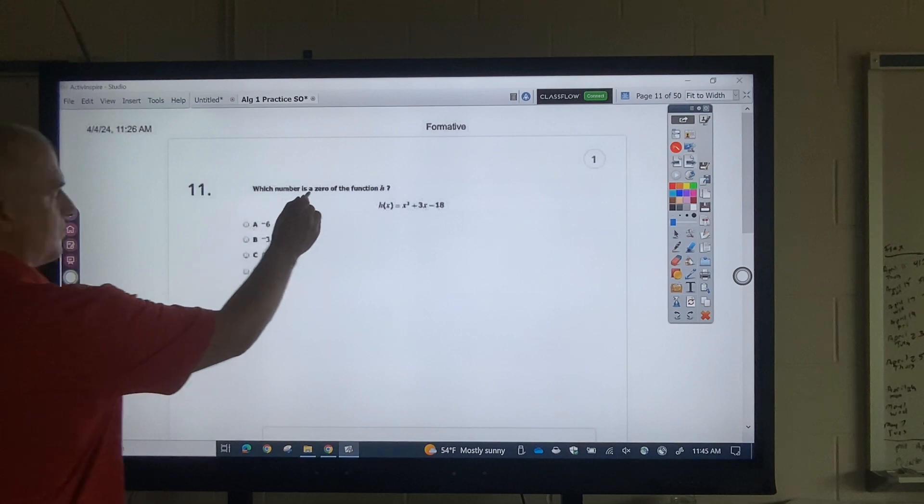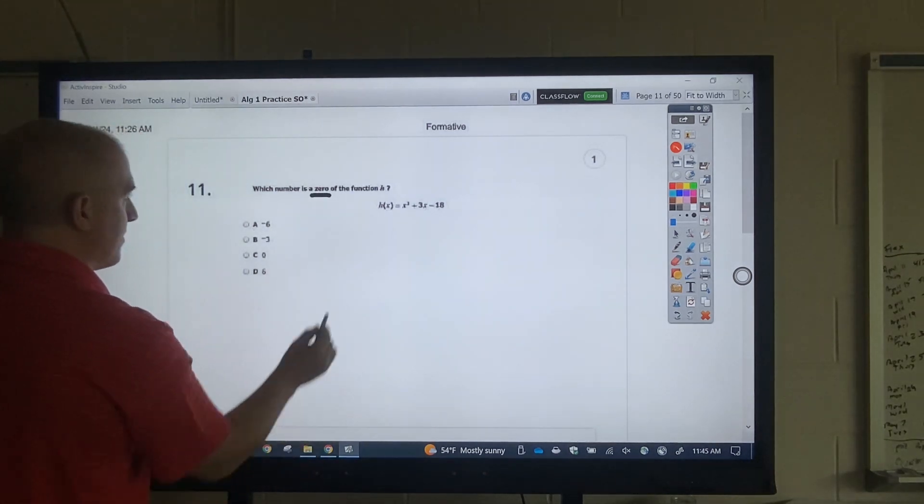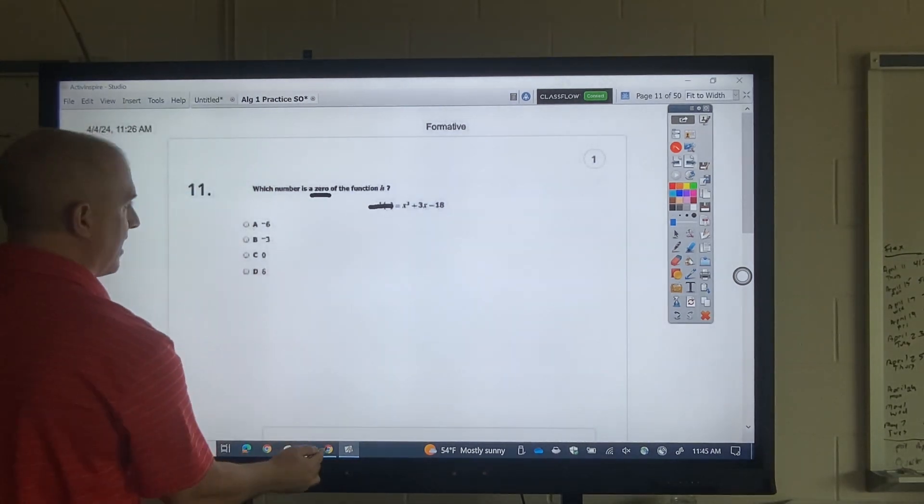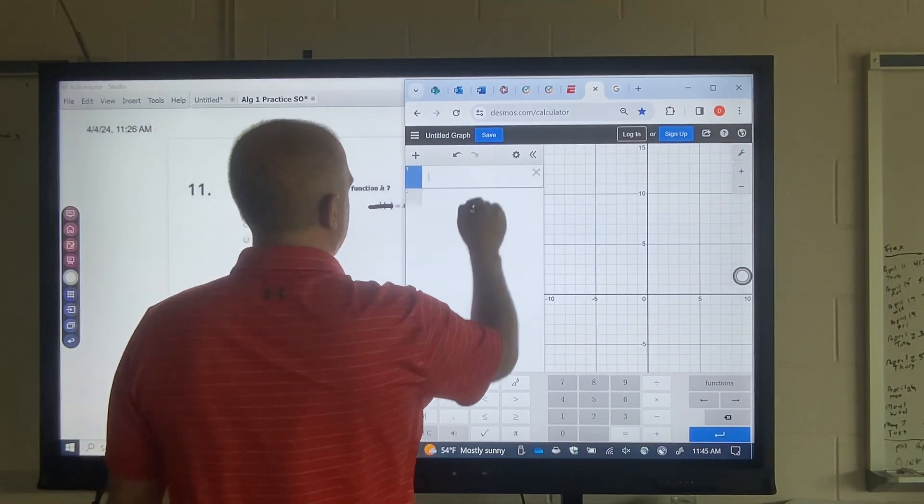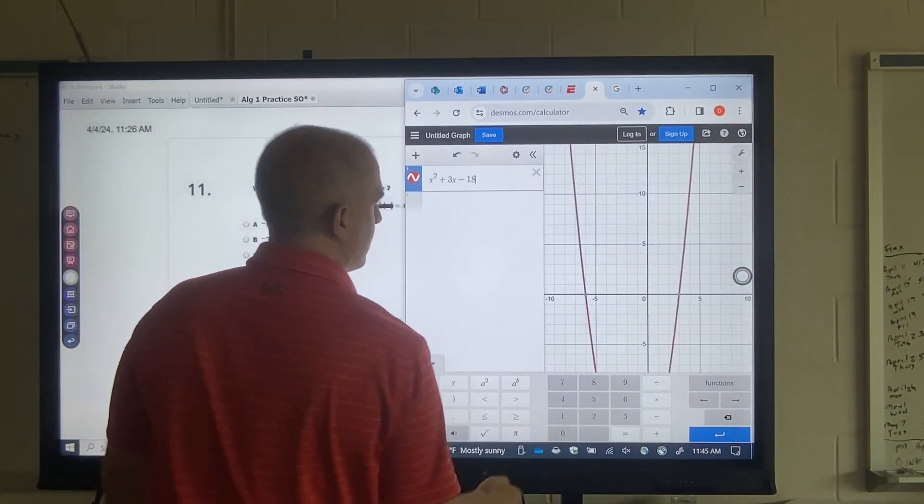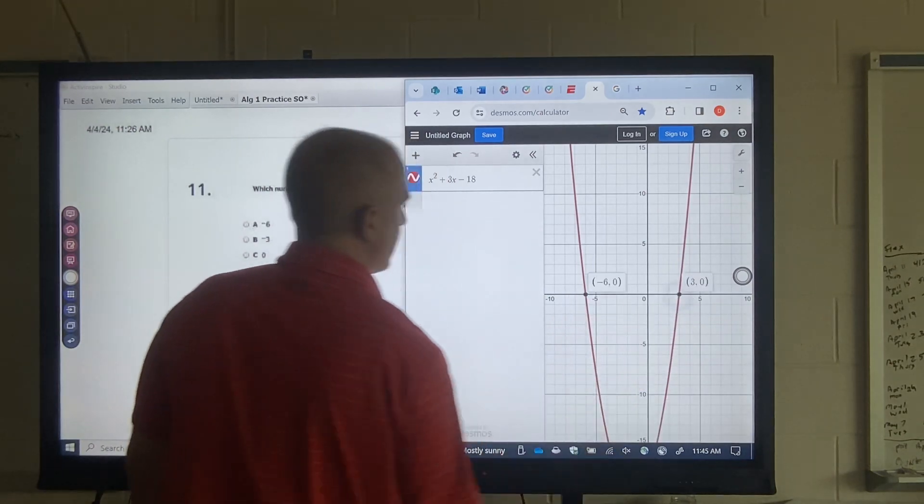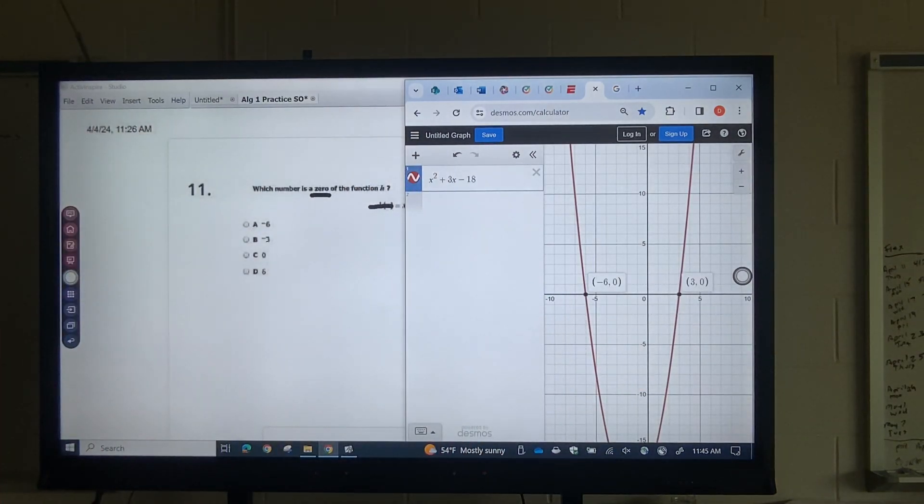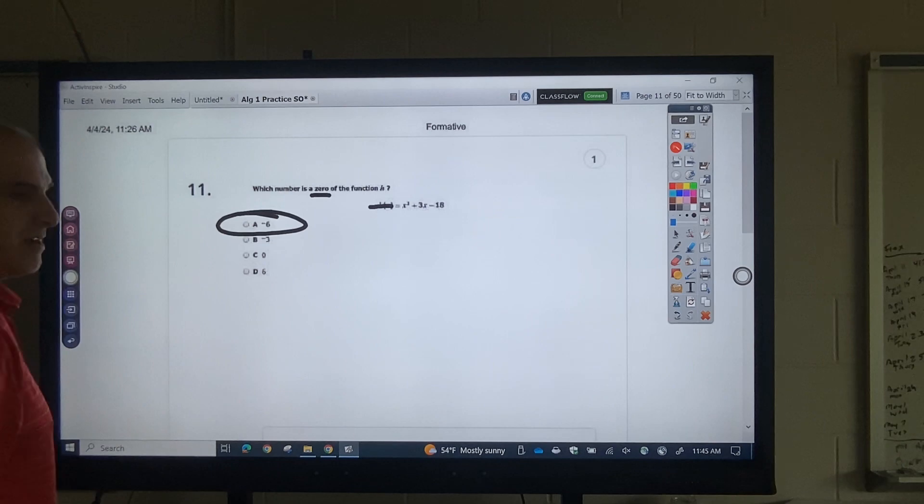What's the 0? 0 means the same thing. So I don't need to type this h of x. I just got to type the x squared. x squared plus 3x minus 18 here, here. That's negative 6 and 3, which that means that's my only choice.